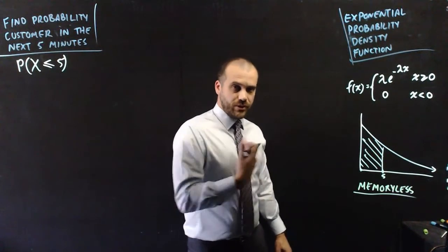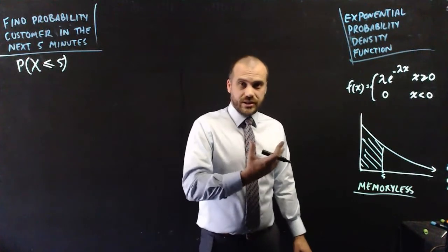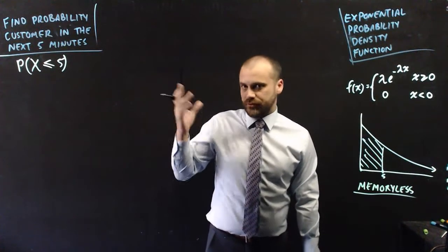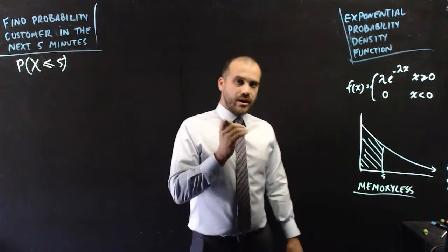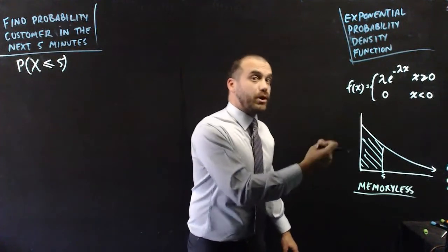Wherever you start from, whichever time you start counting, whether they've been waiting 10 minutes or five minutes or two hours, the probability is still going to be counted from that moment.